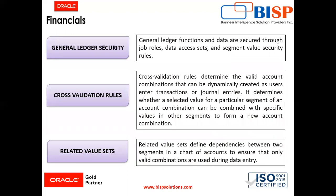Then comes the general ledger security. General ledger functions and data are secured through job roles, data access sets, and segment value security rules. There are some predefined job roles for managing general ledger securities. These job roles have direct privileges which correspond to their responsibilities. To these roles, the data access set is assigned, which controls the data security. These job roles are general accounting manager, general accounting, and financial analyst. In the system, we create a user, assign these roles to that user, and assign the data access set to those roles to maintain the general ledger security.